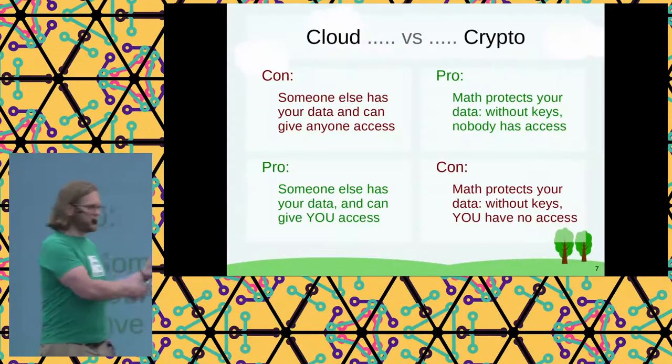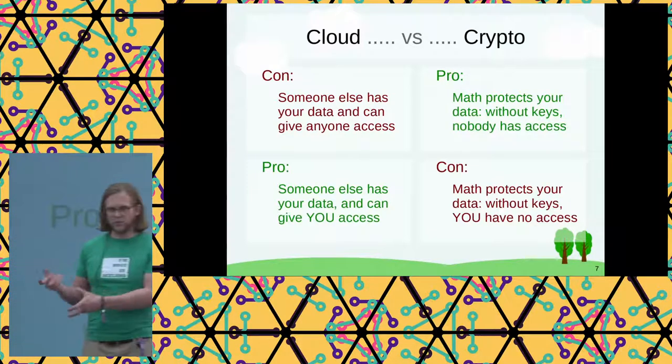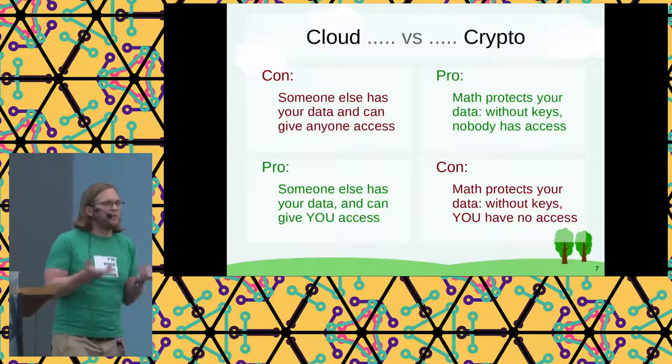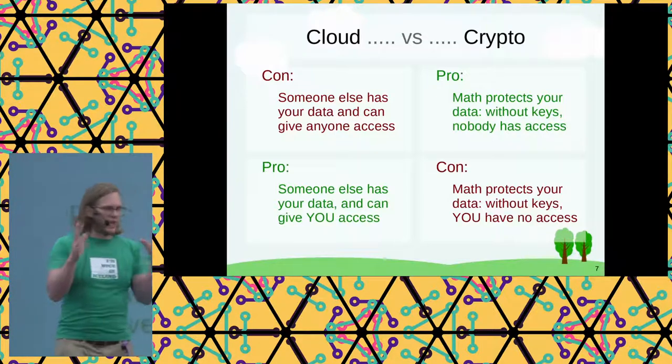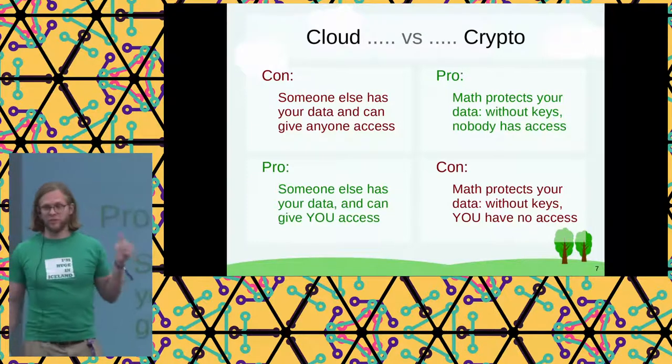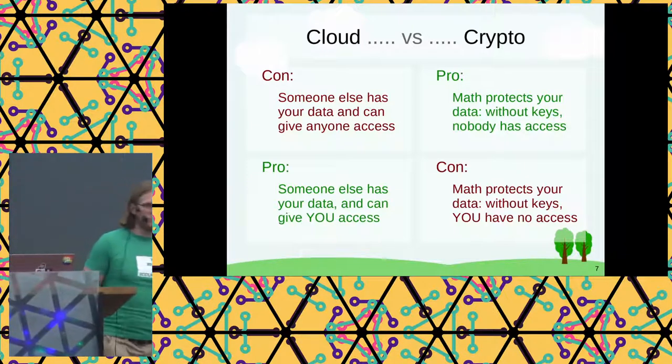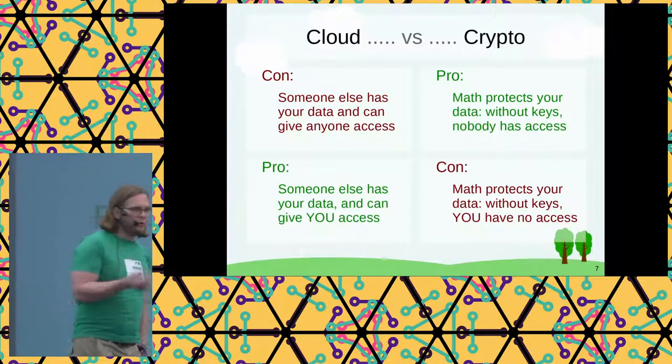Same for hard drive encryption. The Bitcoin wallet stories — everyone's heard those a million times. But I think there's a really interesting duality here. We consider it a huge problem from a privacy point of view that big corporations have our information — until we need access to it again. Then suddenly that's a huge feature. And on the crypto side, we consider it a feature that without the keys, nobody has access. Math protects our data. The structure of the universe protects our data. Until we lose the key — and then math protects our data from us, and our data is gone.